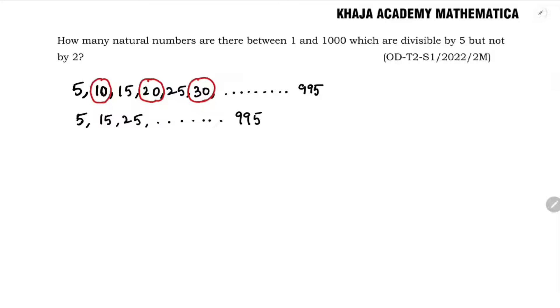Now we need to calculate like how many natural numbers are there which are divisible by 5 but not by 2. So this is the series. Here the first term A is 5.